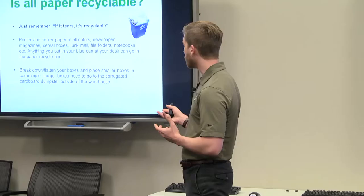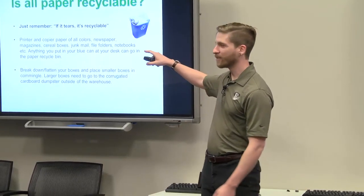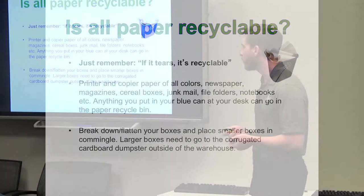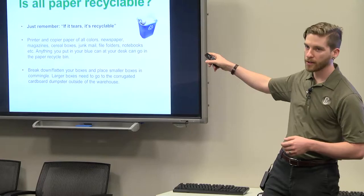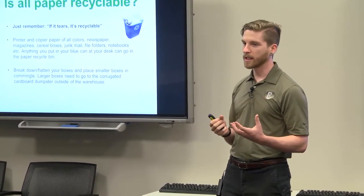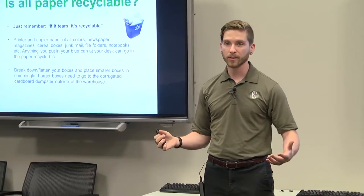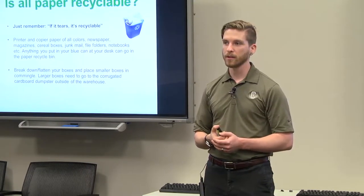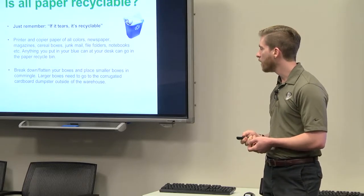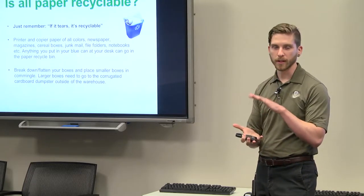So is all paper recyclable? I thought this was really clever. If it tears, it's recyclable. So anything that you can rip in half, printer paper, cereal boxes, junk mail, file folders, notebooks, all those can go in those blue bins underneath your desk. If it's a little bit more substantial or if you have a lot of it that's going to fill up the bin, there's other places around the building that you can take it. And then also if you have boxes, just break them down into smaller so they take up less space.